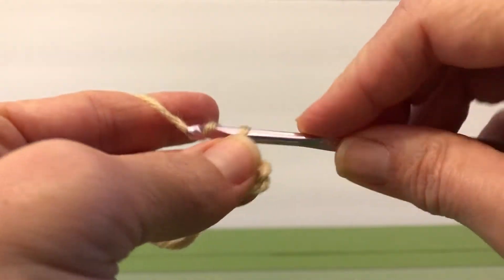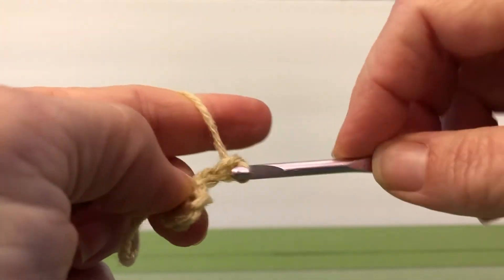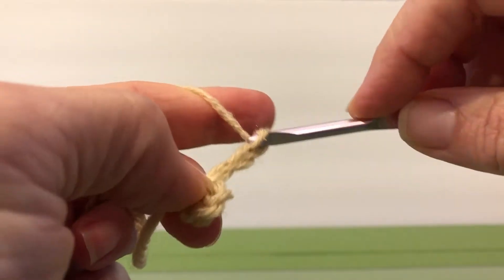Now we're going to chain three, and this is going to count as our first double crochet of our granny cluster.